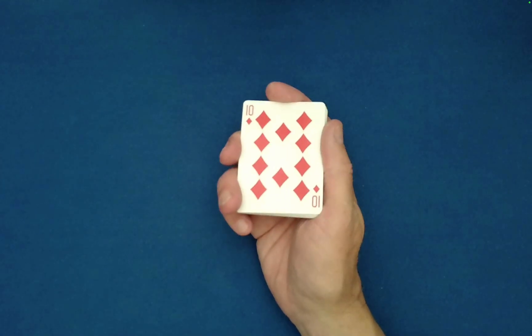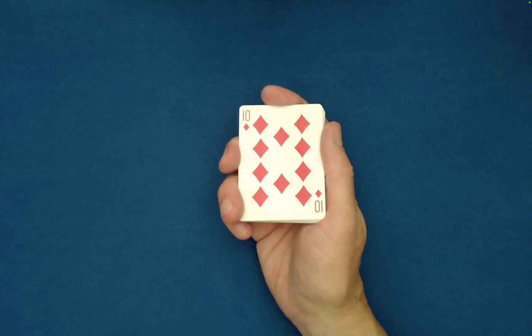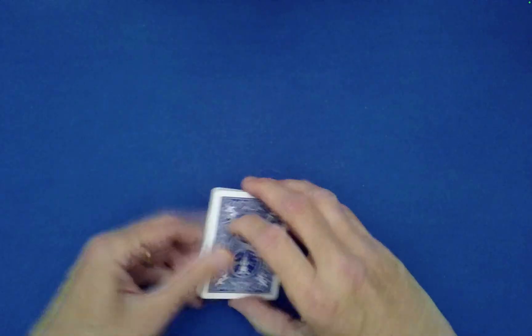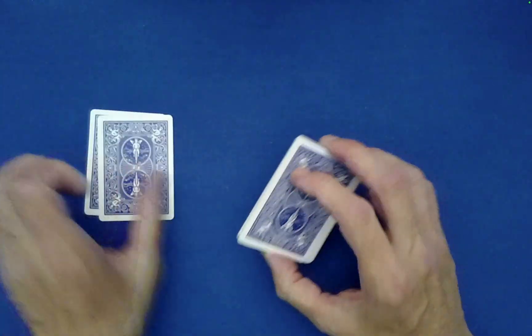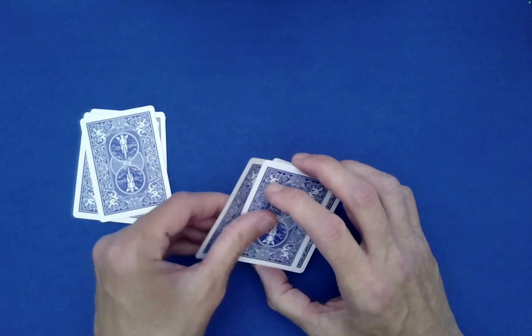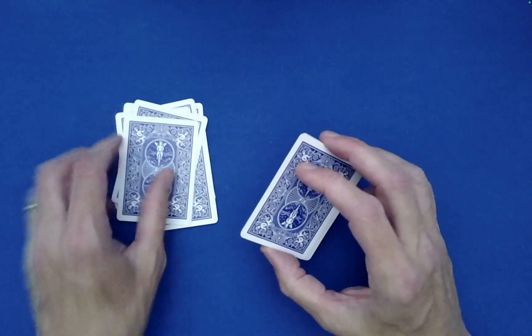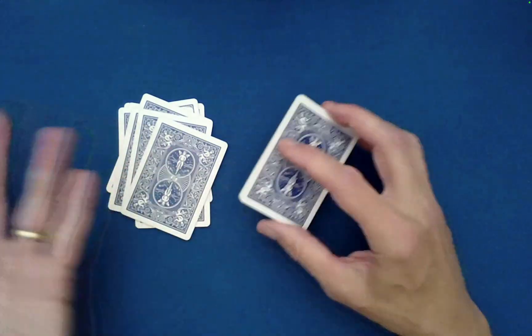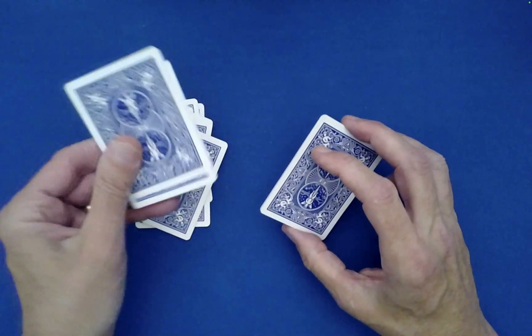Now you as a performer wouldn't see this right, this is just for the spectator to remember. You wouldn't know what that is. Now in the process of doing this crazy lie detection thing, I'm going to also demonstrate some really cool shuffles.